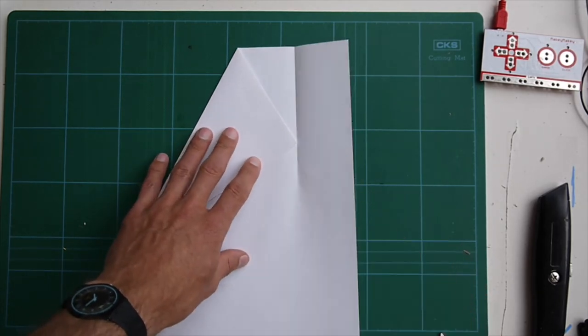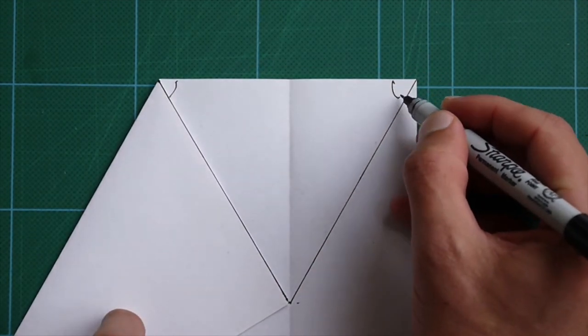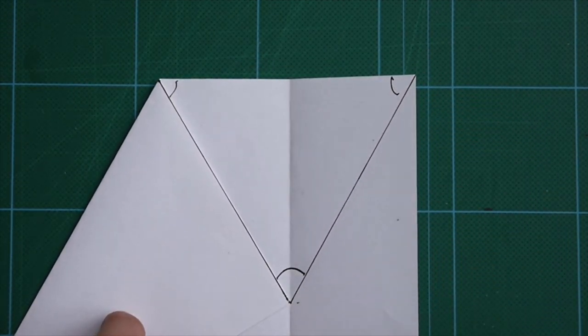Cool. You can see here how we've created an equilateral triangle. So this angle is the same as this angle and it's the same as this angle. They're all 60 degrees.